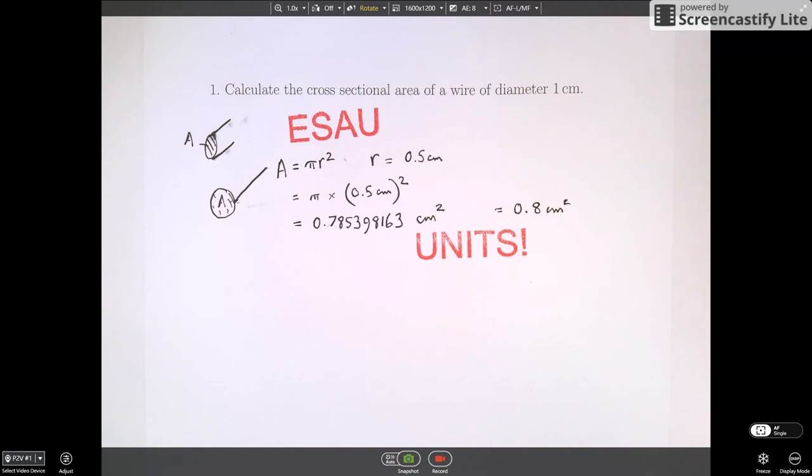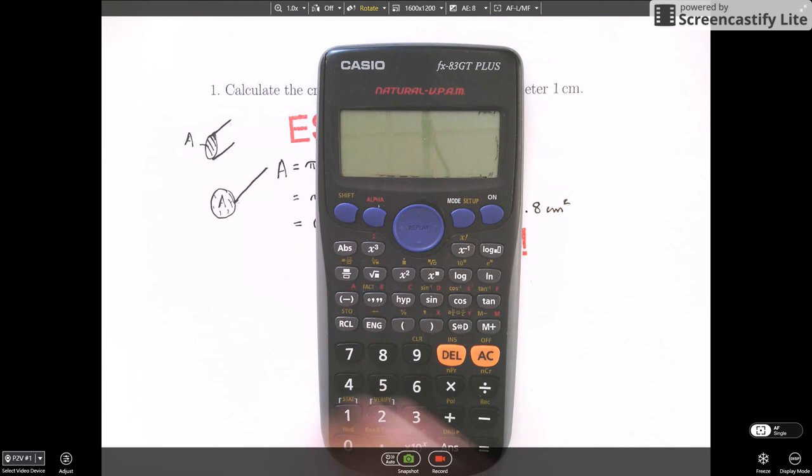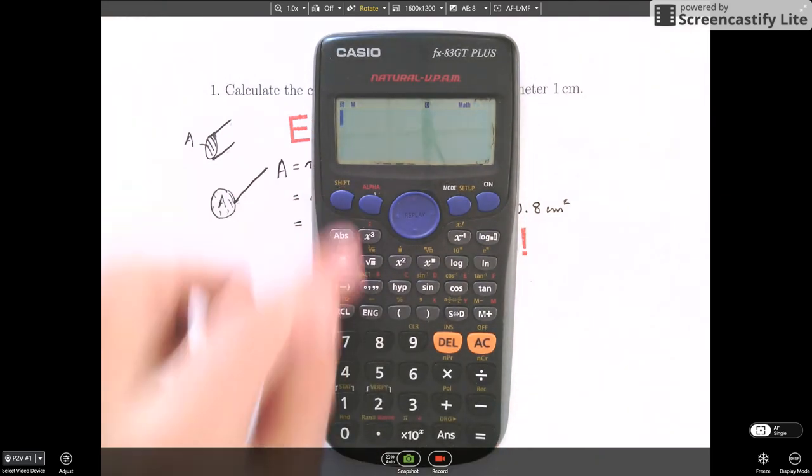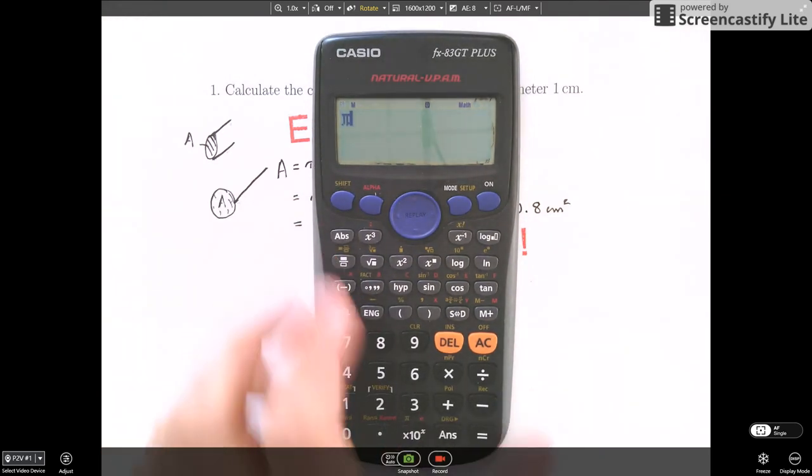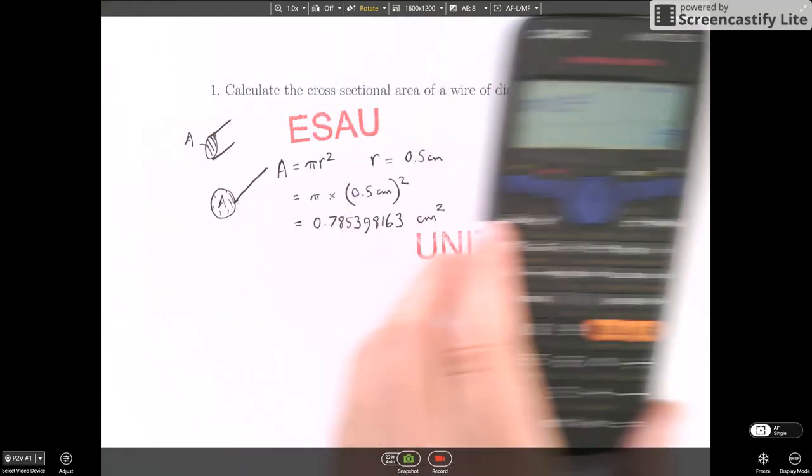Even more modern calculators have what's called natural display. So it was originally called textbook display. Now it's called natural display. So this is even worse. Let me show you why. So here, if I enter pi, I get a nice pi symbol. And then if I times 0.5 squared, it will actually give me a quarter pi.